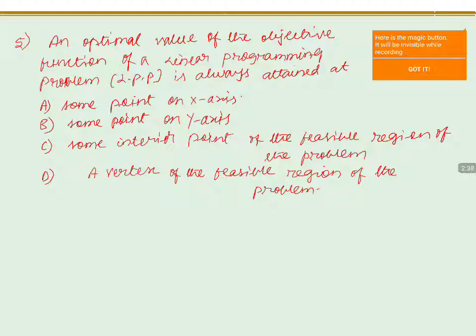Third option: some interior point of the visible region. We won't consider this option at all, because we always check for the vertices of the visible region, and the vertex should have the characteristics of getting the common region of the given inequations.